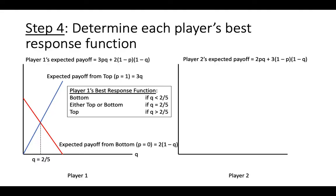At q equals 2 fifths, player 1's expected payoffs from playing top and bottom are the same, so they are indifferent between playing top and bottom. For values of q greater than 2 fifths, player 1 should play top, since their expected payoff from top is greater than their expected payoff from bottom for these values of q.